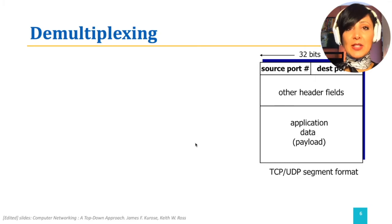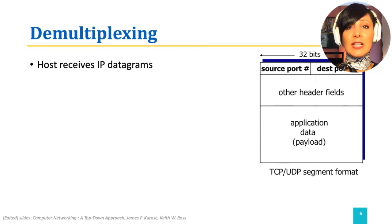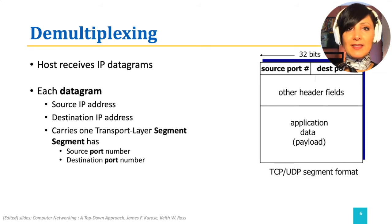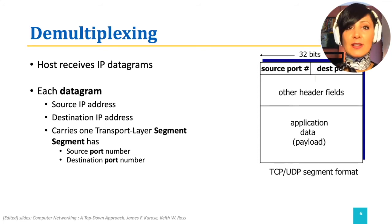When a host receives an IP datagram in layer 3, which is the network layer, the datagram has IP addresses of the source and destination hosts. That is how datagrams are delivered in layer 3, using IP addresses. The delivered datagram carries one transport layer segment, which has the source port and destination port addresses, and some other fields.